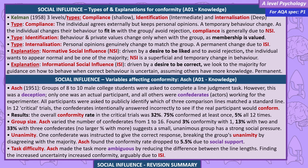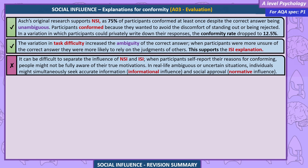Unanimity variation: one confederate was instructed to give the correct response, breaking the group's unanimity by disagreeing with the majority. Asch found the conformity rate dropped to 5.5% due to social support. Task difficulty variation: Asch made the task more ambiguous by reducing the difference between line lengths, finding that increased uncertainty increased conformity, arguably due to ISI. Evaluation: Asch's original research supports NSI, as 75% conformed at least once despite the correct answer being unambiguous. Participants conformed because they wanted to avoid the discomfort of standing out or being rejected.